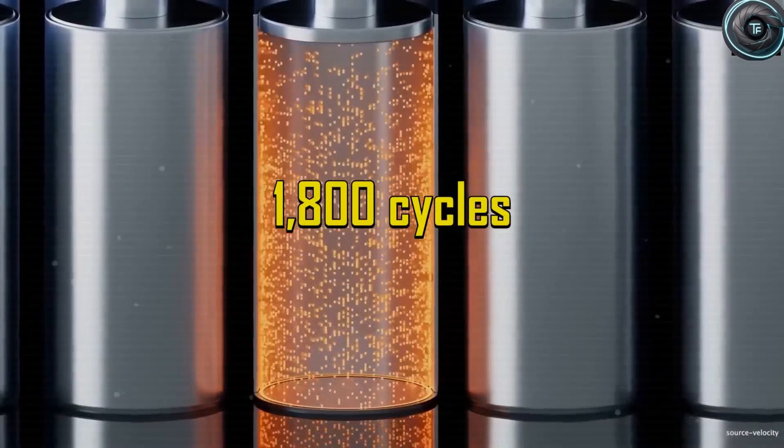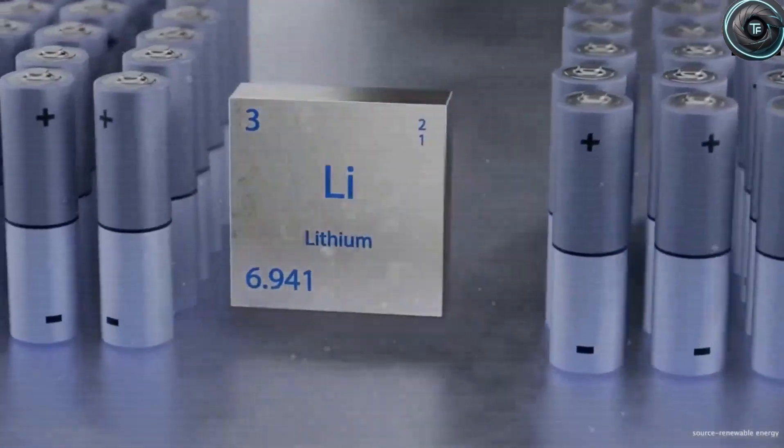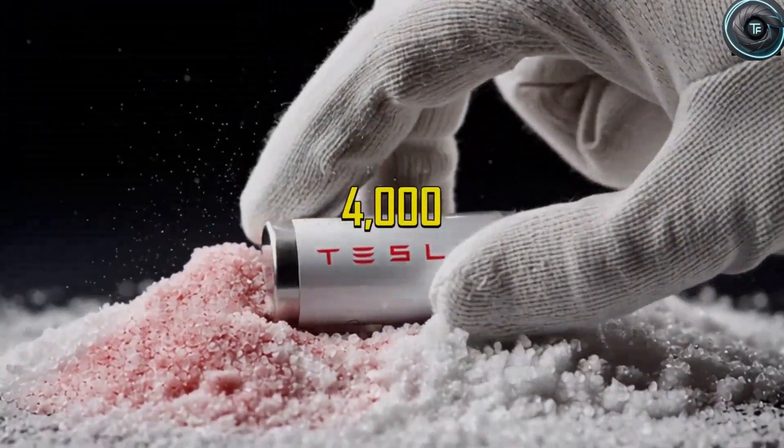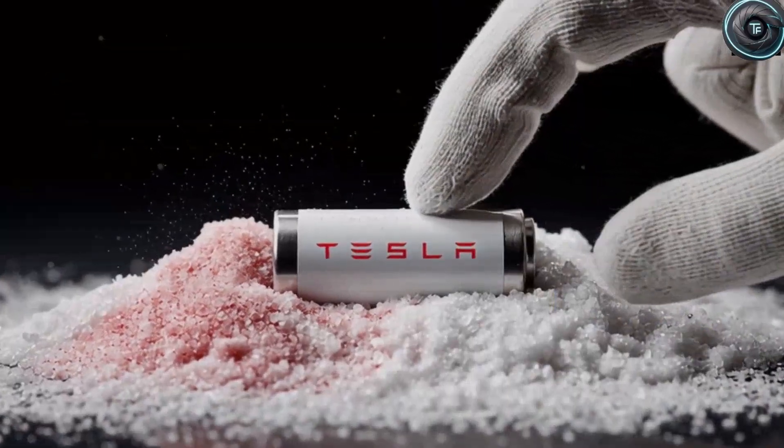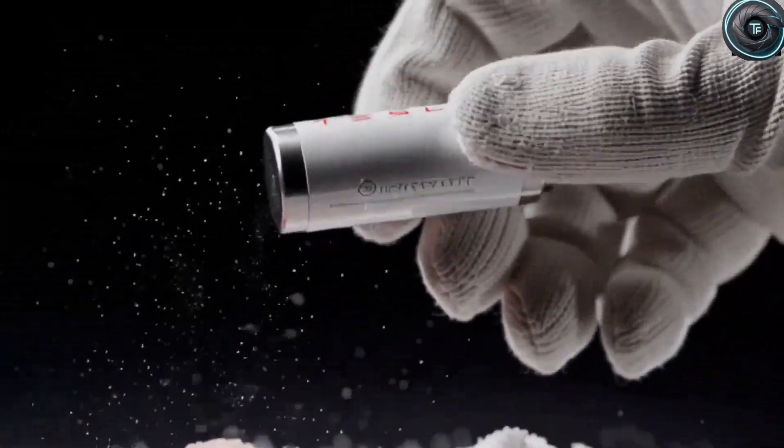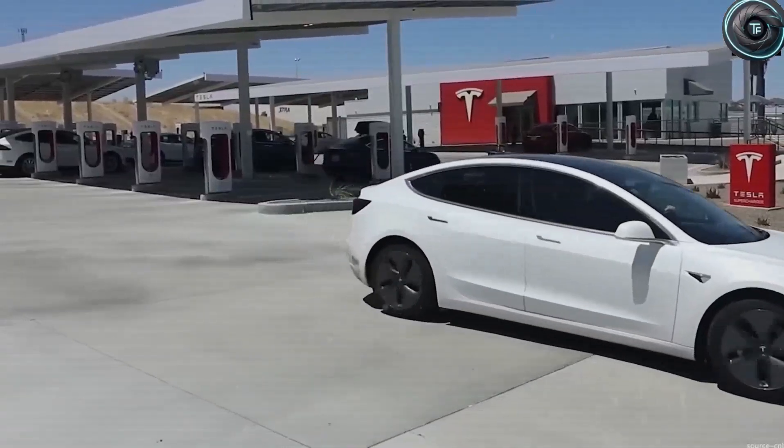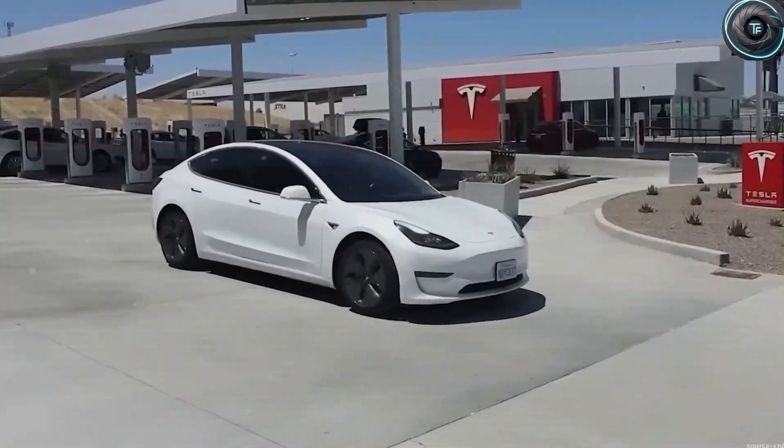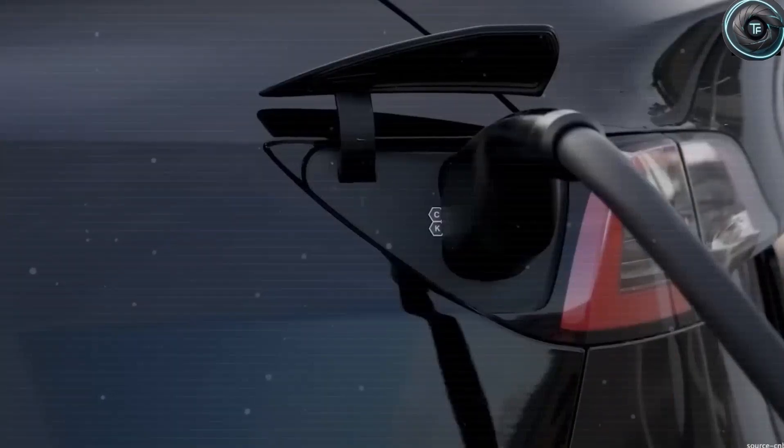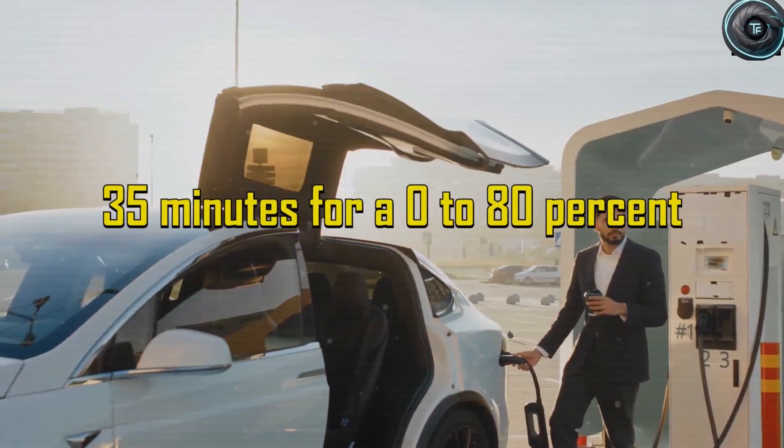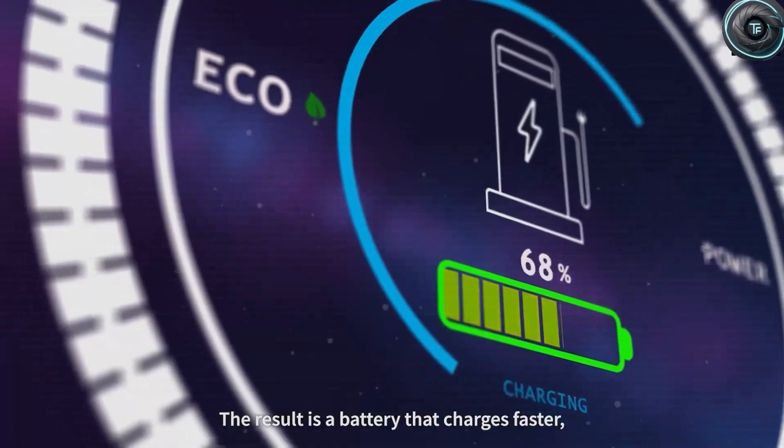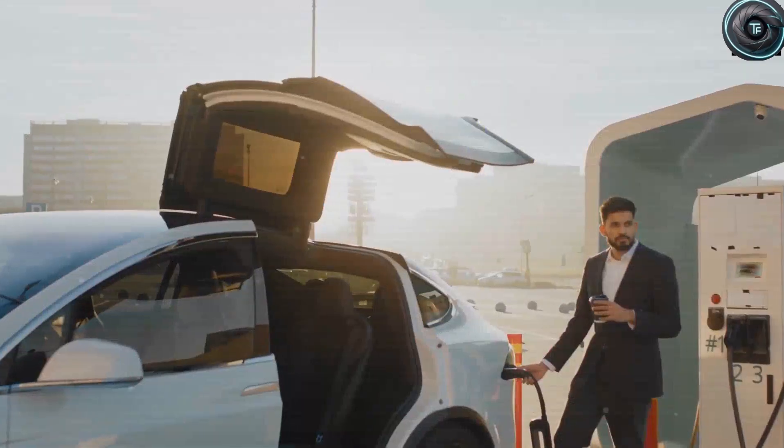But what Tesla is testing for 2026 is operating on another level entirely. Instead of the 250 to 270 watt-hours per kilogram that you typically see from today's best lithium-ion NCM cells, Tesla's sodium-ion packs are expected to deliver somewhere around 280 to 300 watt-hours per kilogram. That jump may not sound massive when you just hear the numbers, but in practice it changes everything. It means more miles out of the same-sized pack, and that is a critical factor for making smaller, affordable cars like the Model 2 practical for real-world use.